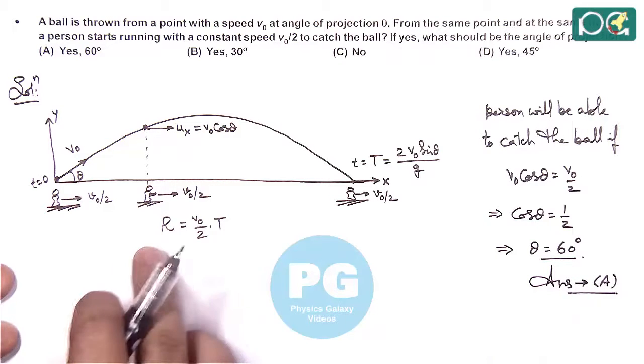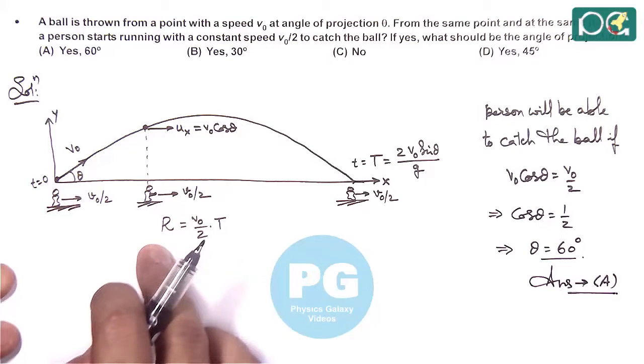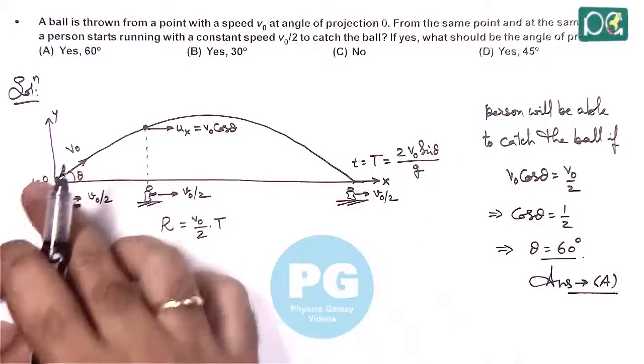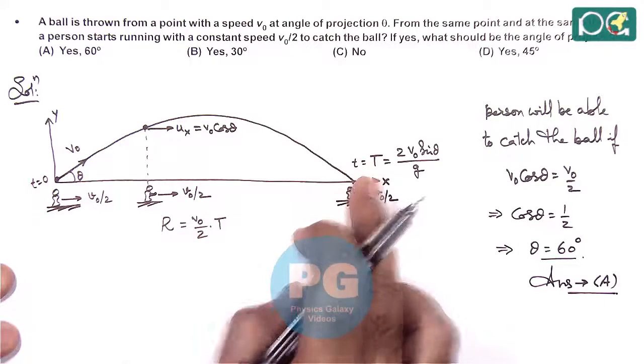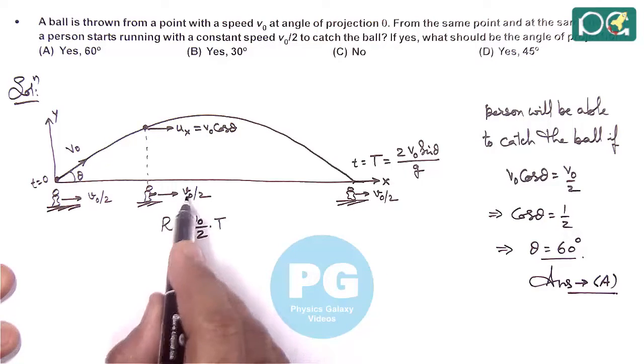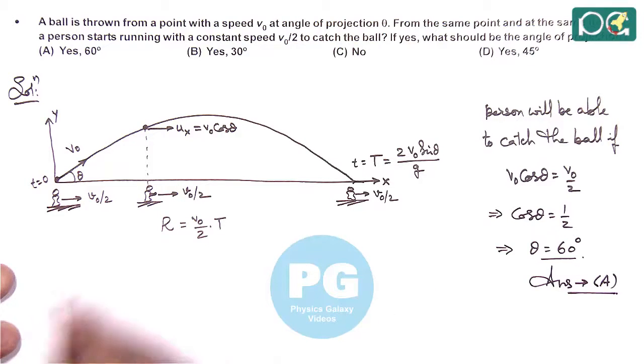If we mathematically solve the equation that the range covered by the man equals the horizontal range of ball, then in time t, the man has travelled velocity into time. This should be the horizontal range of projectile.